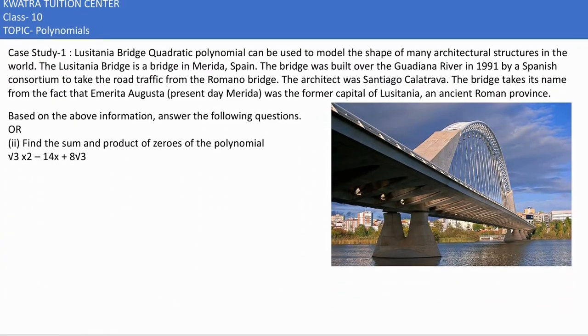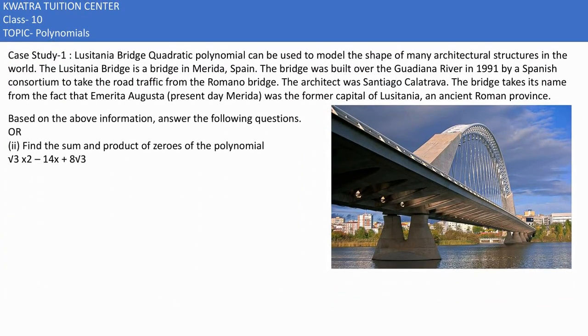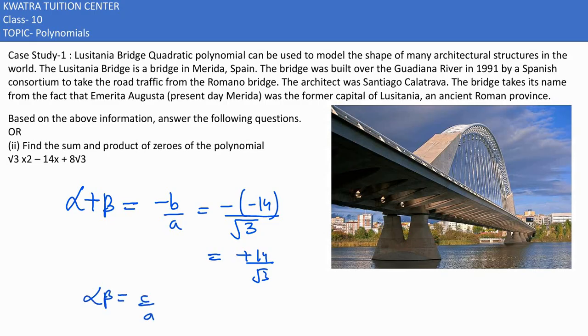In the second part, the or part of it says find the sum and the product of zeros of the polynomial. That's very easy to do. α + β is equal to -b/a. Minus sign is 0, b value is -14, a is √3, so this is positive 14/√3. αβ would be c/a. c in this case is 8√3 and a in this case is √3, so you would get 8 as an answer for it.